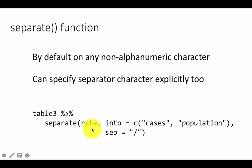We have said table 3, pipe, separate rate into cases and population, with the separator equals forward slash. We didn't need to do it in this particular case because it would have found that automatically. But there are situations where we are separating a column that has several non-alphanumeric characters and we want to separate on one particular one, then we can specify it like this.